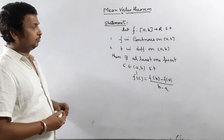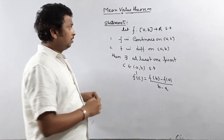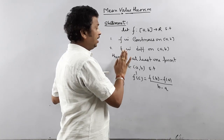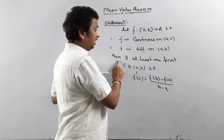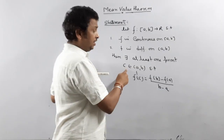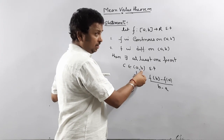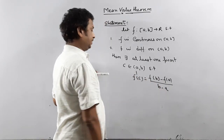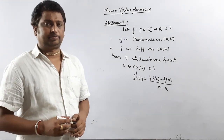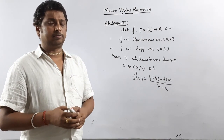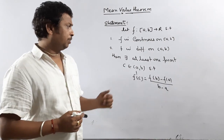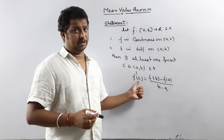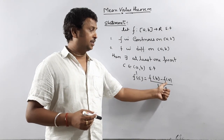This is similar to Rolle's theorem. A function defined on the closed interval [a, b] must be continuous on the closed interval and differentiable on the open interval. Then there definitely exists at least one point c interior to (a, b) such that f'(c) = (f(b) - f(a)) / (b - a). The function must be continuous on the closed interval and differentiable on the open interval — then one such point c will always exist.